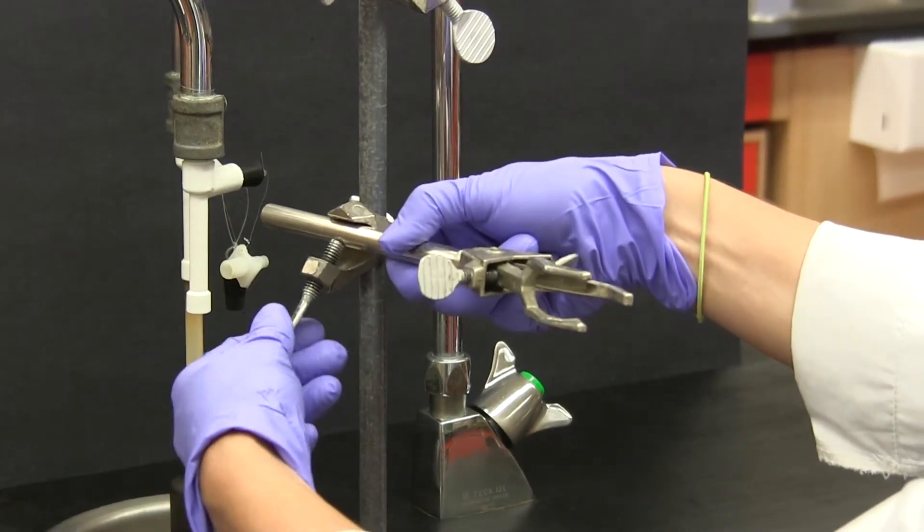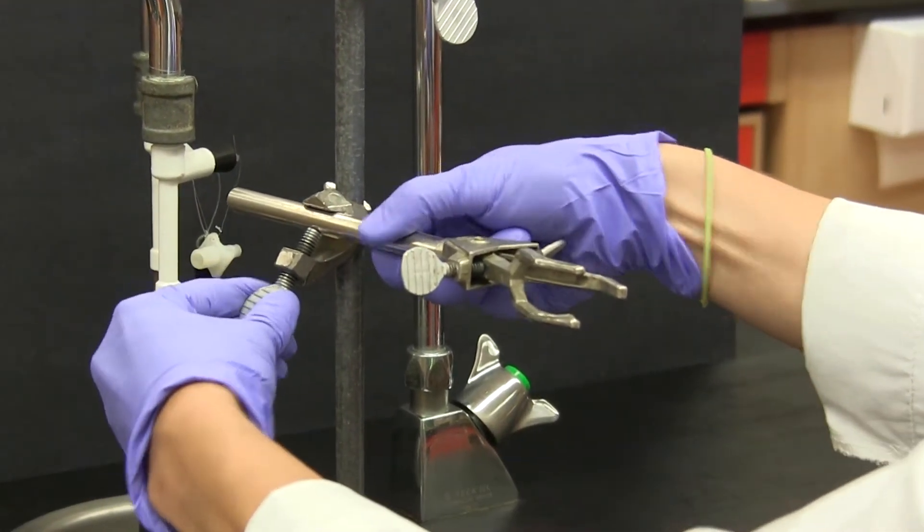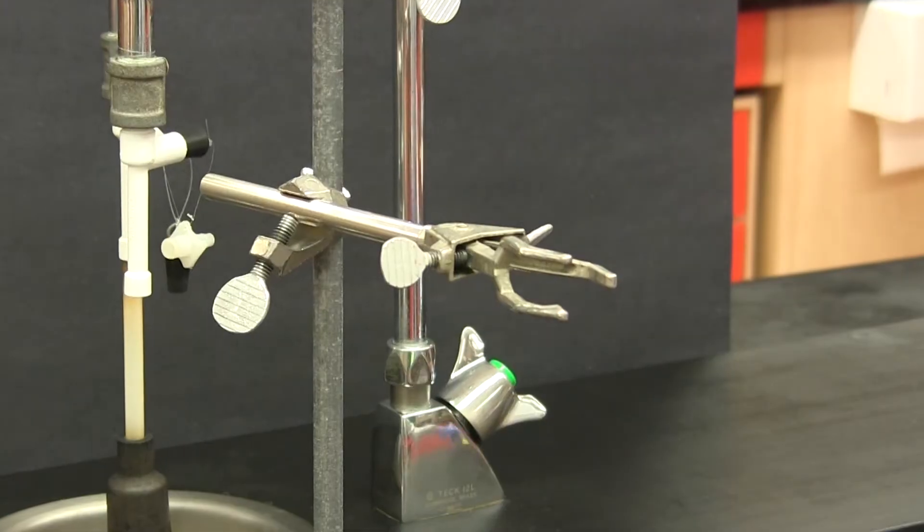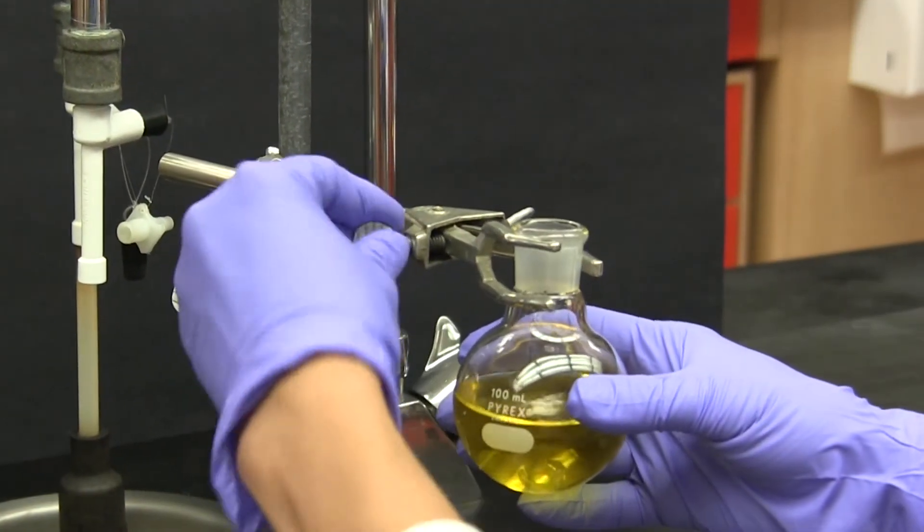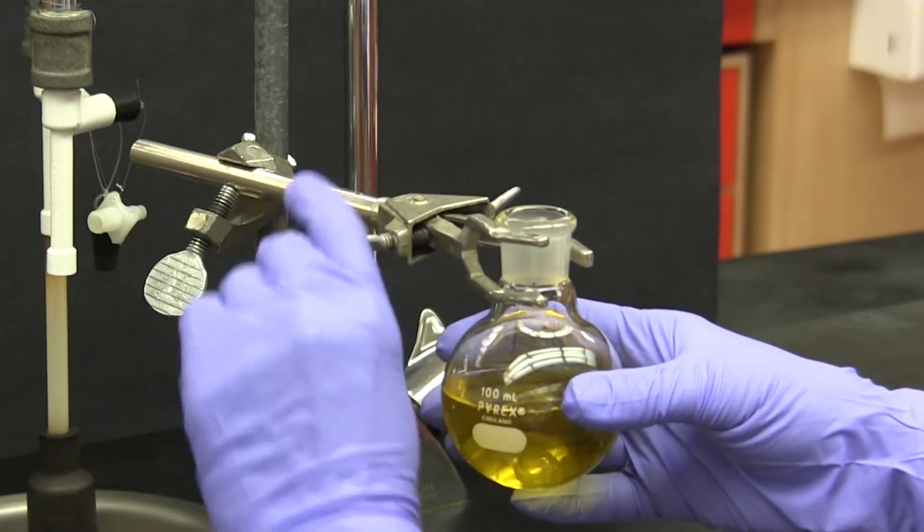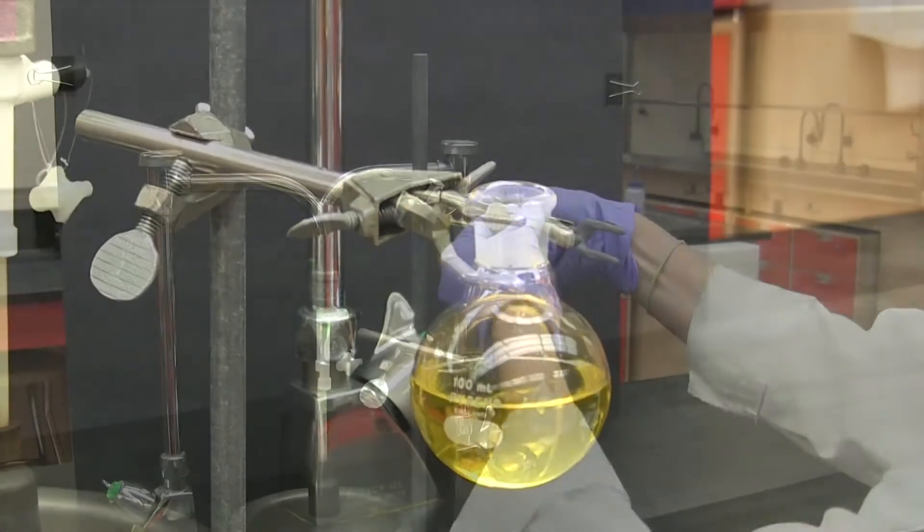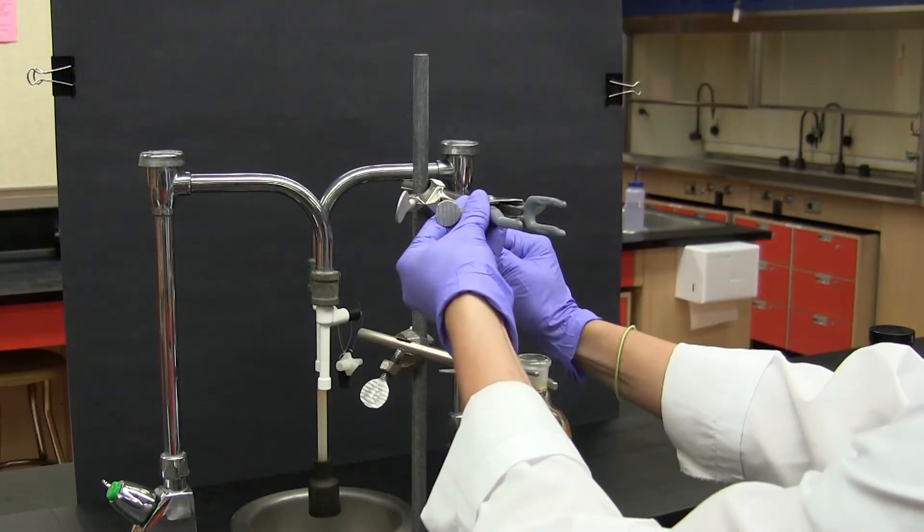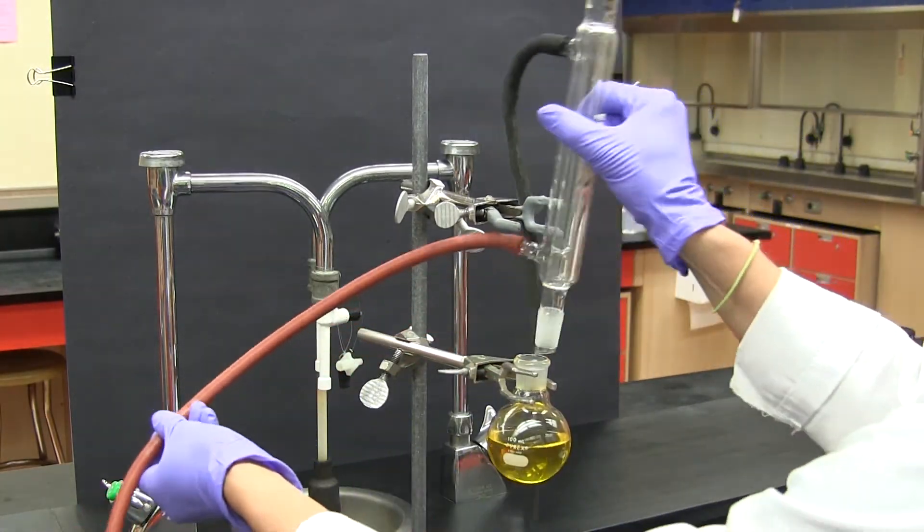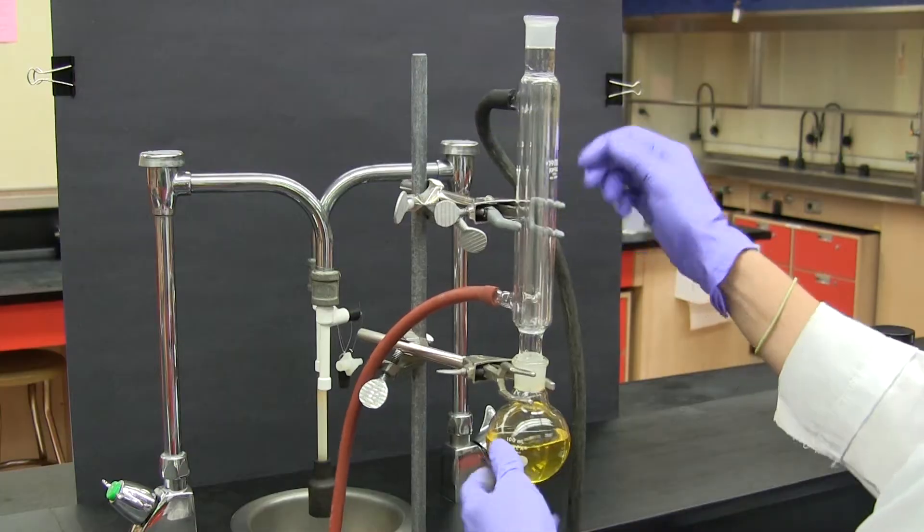Assembly of the reflux apparatus begins by securely clamping the reaction flask. If this is first clamped securely and vertically the rest of the apparatus will be easier to fit together properly. A condenser is attached to the reaction flask making sure of a good fit. It also is clamped in position.